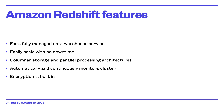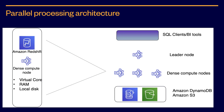Amazon Redshift is a fast, fully managed data warehousing service that makes it simple and cost-effective to analyze all your data using standard SQL and existing business intelligence tools. Building a traditional data warehouse is complex and expensive, often taking months and significant financial resources. Amazon Redshift enables you to run complex analytic queries against petabytes of structured data using sophisticated query optimization, columnar storage on high-performance local disks, and massively parallel data processing, with most results returning in seconds.